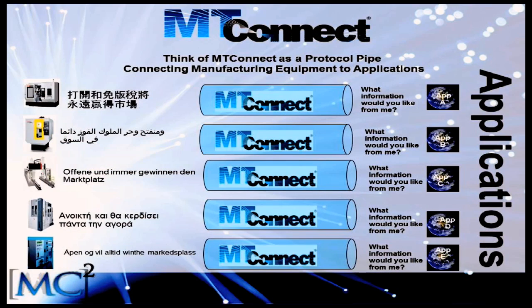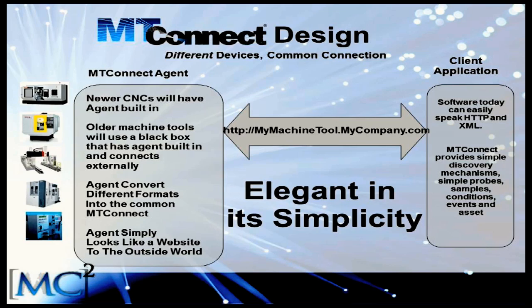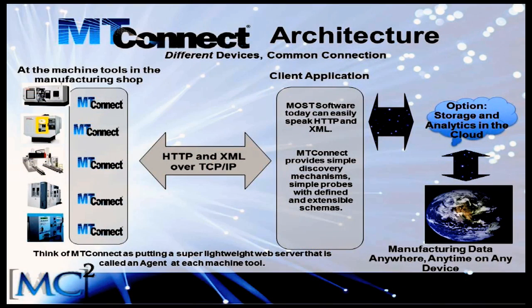When we use the term MT Connect enabled, the way to think about this is that MT Connect acts as a bridge. On a piece of hardware — manufacturing equipment such as a machine tool — you have a piece of software that's MT Connect enabled, and we refer to that as an adapter/agent. On your software, that's also MT Connect enabled. So that allows information to be pulled from a machine tool, for example, into an application, and then it's the application that turns that data into information.